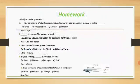Question 3: The crops which are grown in nursery — options are tomato, lean, weed, none of these. Answer: tomato. Question 4: Before sowing, dash is not used for the soil. Options: hoe, kara, plow, drill. Answer: kara is not used for the soil. Question 5: Give the name of the agricultural tool shown in the figure. Options: hoe, kara, plow, drill. The correct answer is hoe.